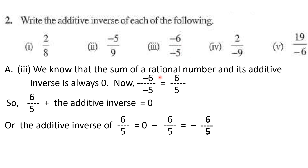Similarly, minus six upon minus five: the minus signs in numerator and denominator cancel, giving six upon five. Then six upon five plus its additive inverse equals zero, so the additive inverse equals zero minus six upon five, which is minus six upon five. Therefore minus six upon five is the additive inverse of six upon five.